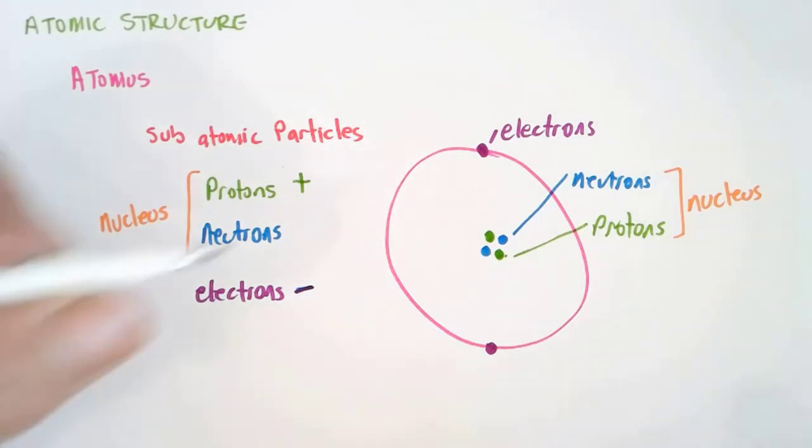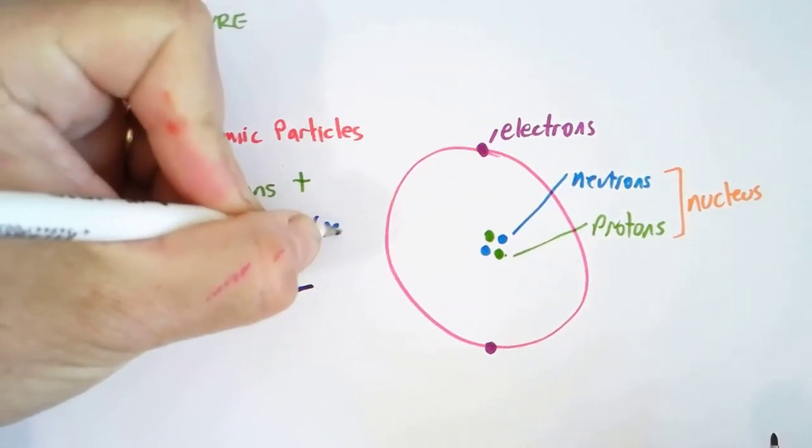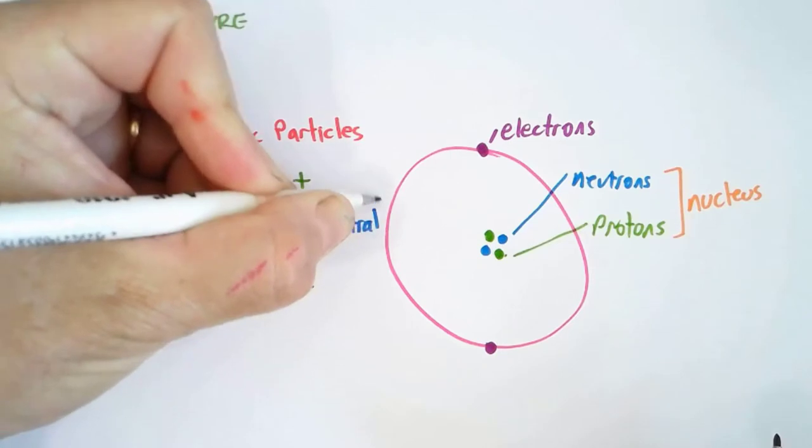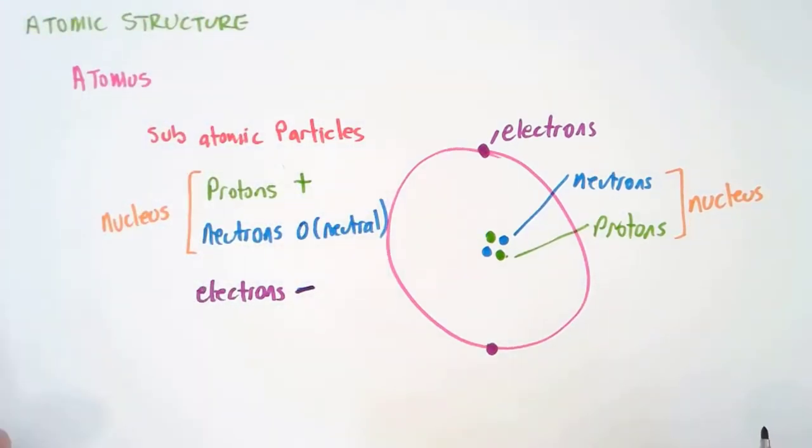Neutrons have no charge. They are neutral. And the way you remember that is neutral for neutron. Neutrons are neutral.